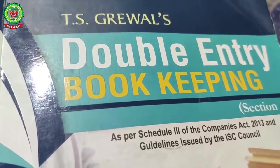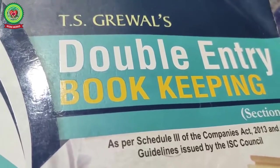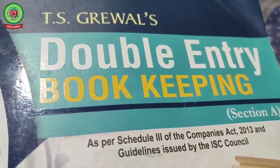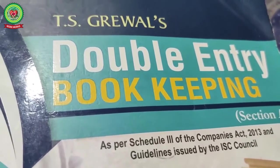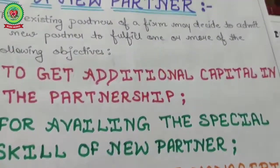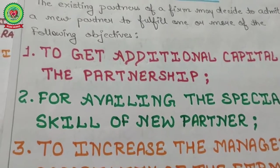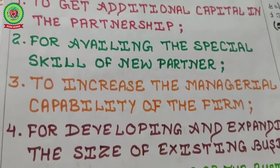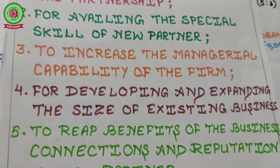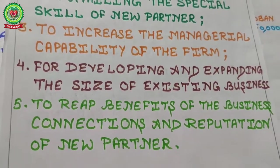Good morning students. Today is the third day of Chapter 3 on admission of a partner. When a new person becomes a partner in the firm, the objectives include getting additional capital, availing special skills, increasing managerial capability, expanding the size of the business, and reaping the benefits of the business connections and reputation of the new partner.